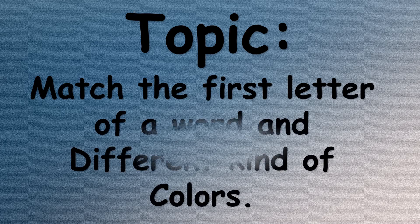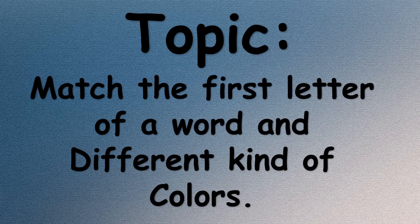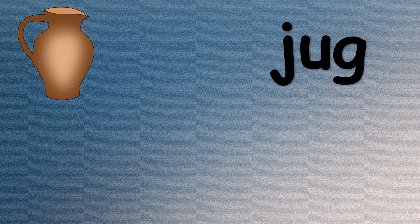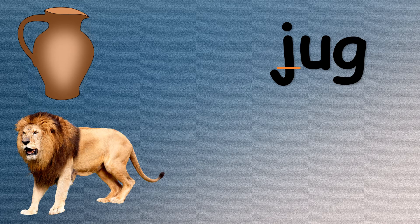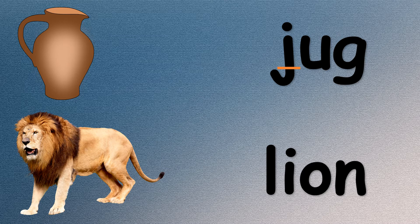Topic: Match the first letter of a word with different kinds of colors. Job. What is the first letter of the word job? Very good. Lion. What is the first letter of the word lion? Good job.